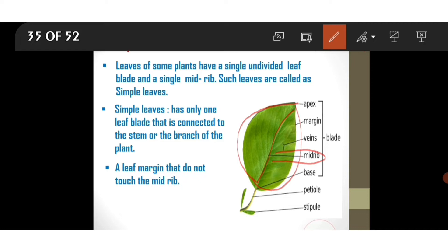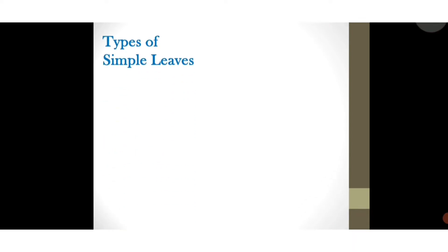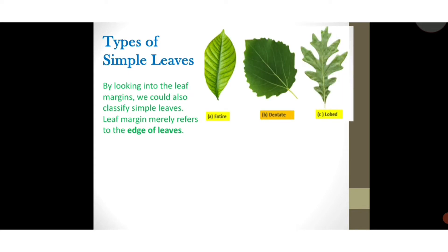Leaves of some plants have a single undivided leaf blade and a single midrib — such leaves are called simple leaves. Examples of simple leaves are mango, banana, and hibiscus. By looking at the leaf margins we can also classify simple leaves. Leaf margin refers to the edges of leaves. There are three types: entire, dented, and lobed — their edge shapes are different.